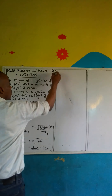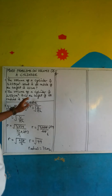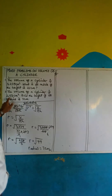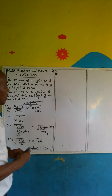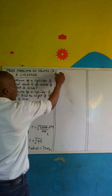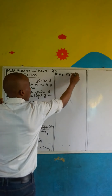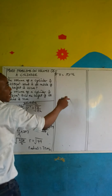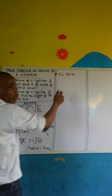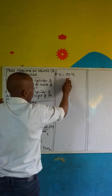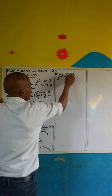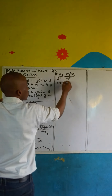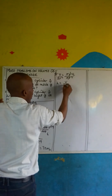Let's proceed with the second problem. It says: the volume of the cylinder is 2,156 centimetres cubed. Find the height if its radius is 7 centimetres. Once again, the formula is Volume = π r squared h. We are looking for the height, so let's make height the subject of the formula. To do this, I will divide both sides by π r squared, so the height will be equal to Volume divided by π r squared.